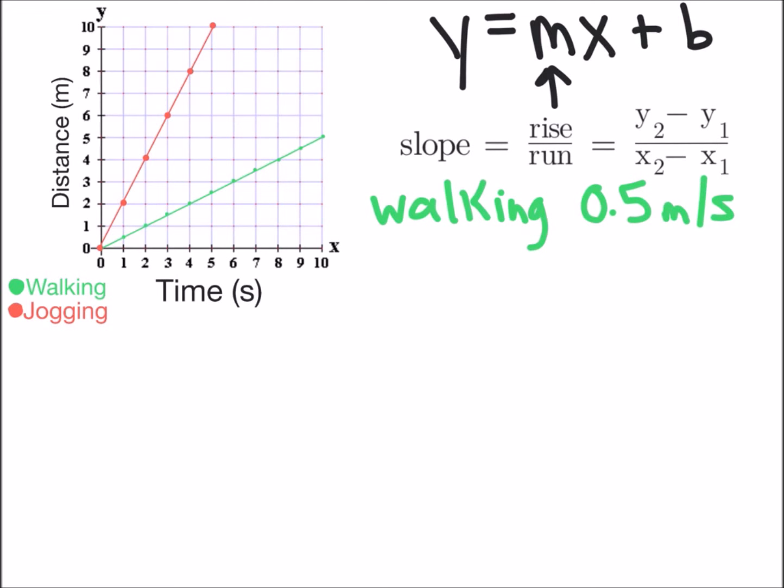Now we're going to look at the data from jogging, so for that I'm going to use my slope equals rise divided by the run and look at the slope data for jogging.